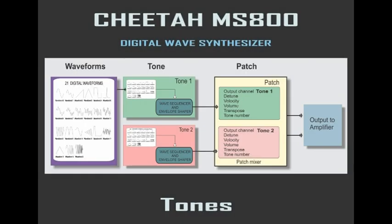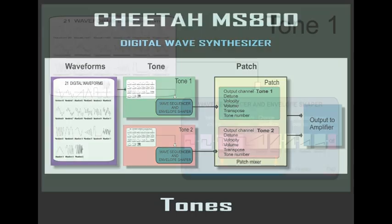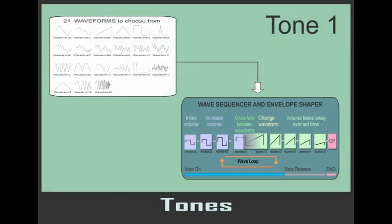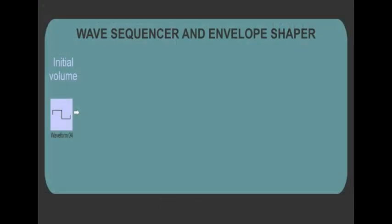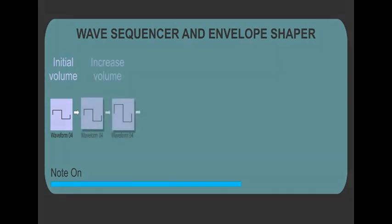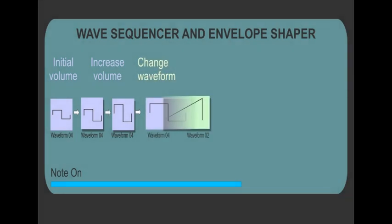So to program a tone, we have a series of waveforms we've chosen and we have to give a number of commands within a tone. So choosing our first waveform, what's going to happen to it, how loud it's going to be. To start off we have to choose initial volume, and here we've got a square wave, which is waveform 4, and all of the commands will happen while we're playing a particular note. So we'll play a key and then we want to give a command to increase the volume over a set amount of time. And then we might want to change the waveform to a saw wave. We have the option to decide how long it takes to move from one to the other. So we have a crossfade parameter.